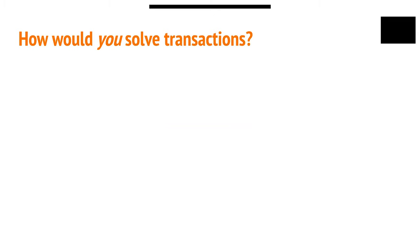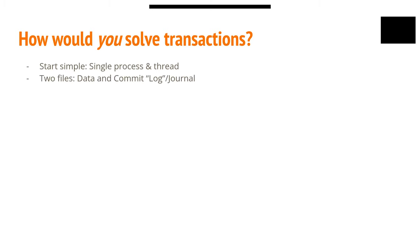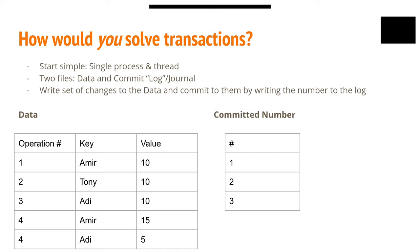Let's be more specific: how would you solve transactions? There are many ways — I'm going to propose one way to build some intuition as to how Postgres works under the hood. Let's start simple: a single process, single thread. We'll create two files — a data file and a commit log. We'll take our previous bash idea and add an operation number. The goal is to allow money to move atomically.